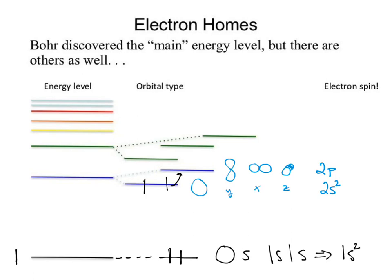Everybody freaks out about electron configuration, but you've already dealt with this in your life. Tell your friend how to get to your house — you provide directions: state, city, street, address. That's all this is. We're identifying the homes for electrons. Neato completo — we'll pick up here next time.